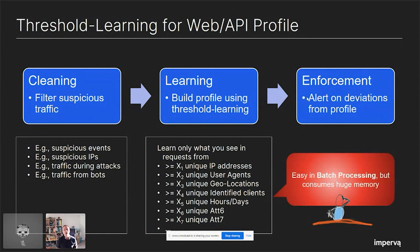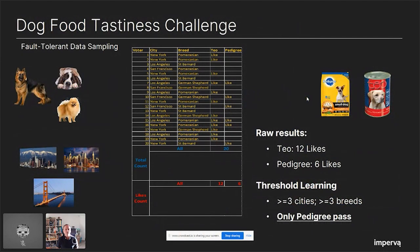I will take you to a completely different world — a fictitious story. This is not real research we carried out. In fact, I don't have a dog, I have a cat, so I'm not biased towards any dog food brand. We want to do a competition between two dog food brands: Pedigree and Teo. We run a poll between different users.